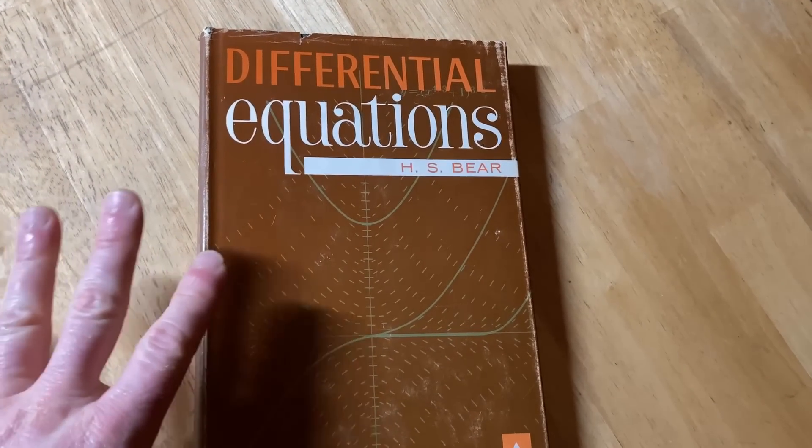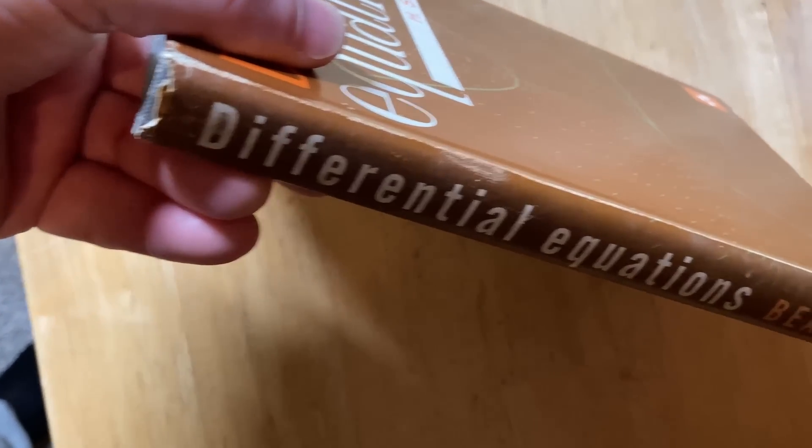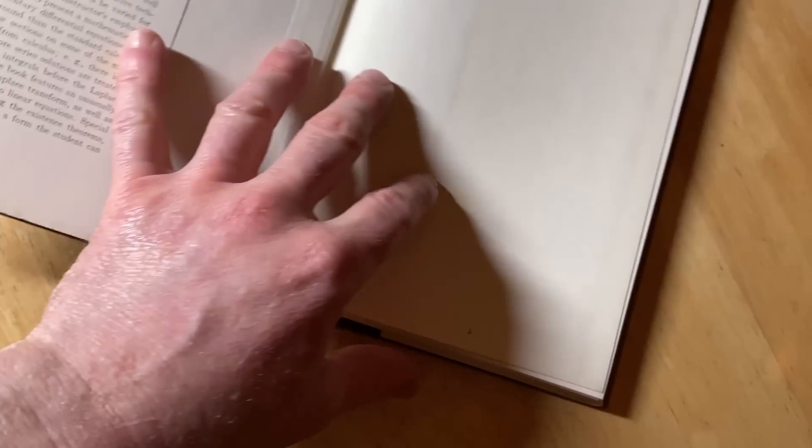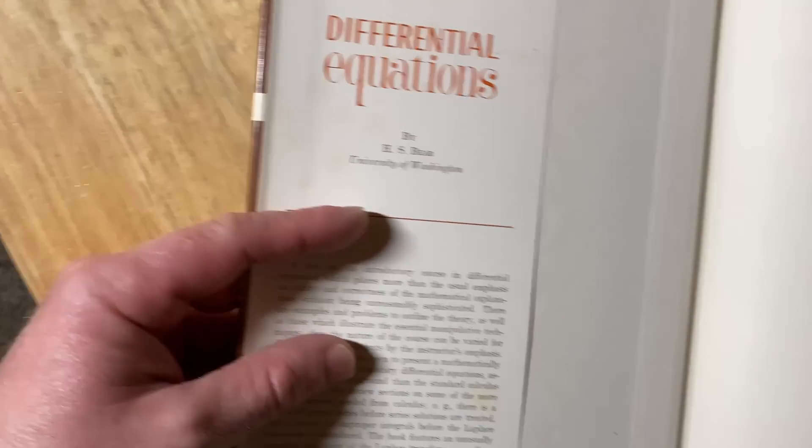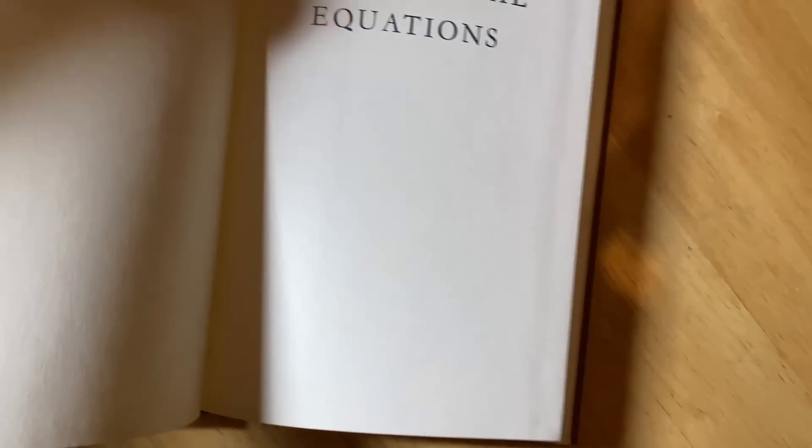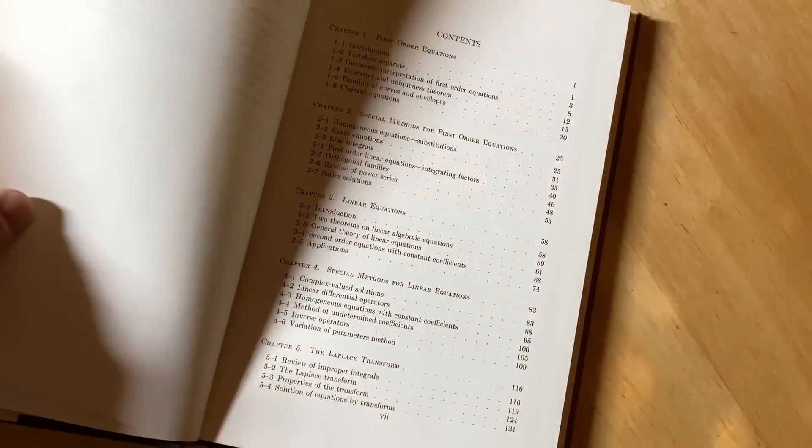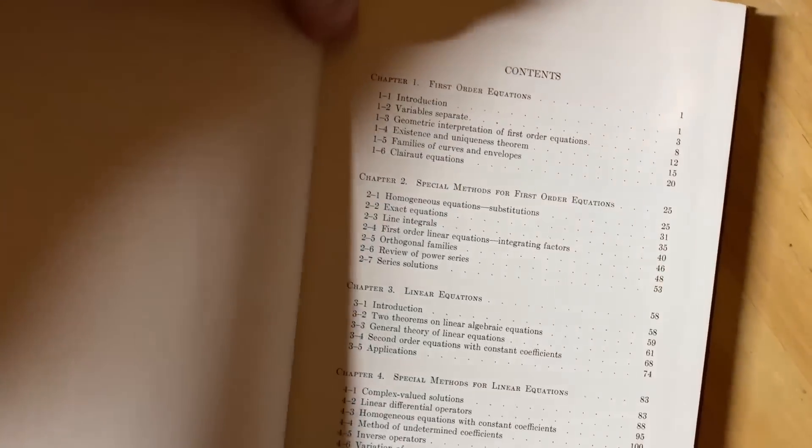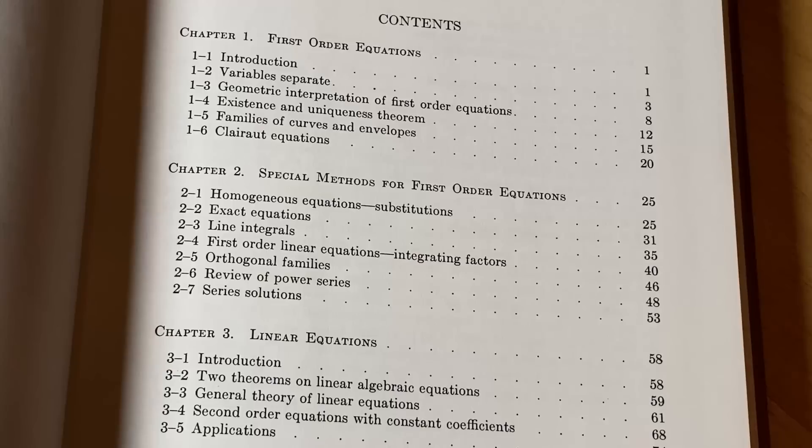This is a really nice copy of Differential Equations by H.S. Baer. This copy still has the dust jacket. The dust jacket is this cover that you see on the book. And typically books with dust jackets are worth more. By H.S. Baer, University of Washington. Cool, right? S. Saragan, 65. Differential Equations. This book is in phenomenal condition.